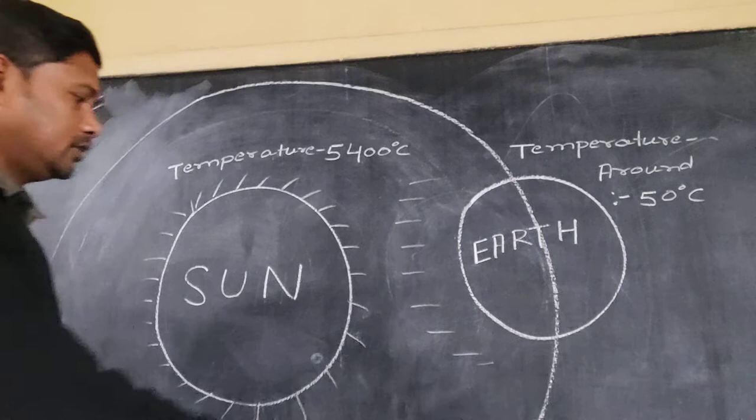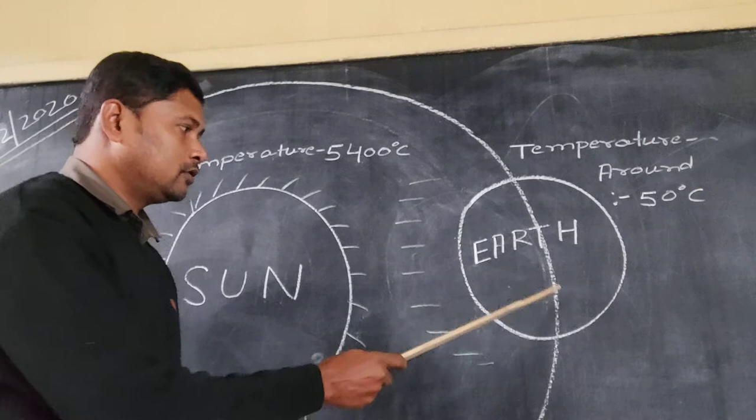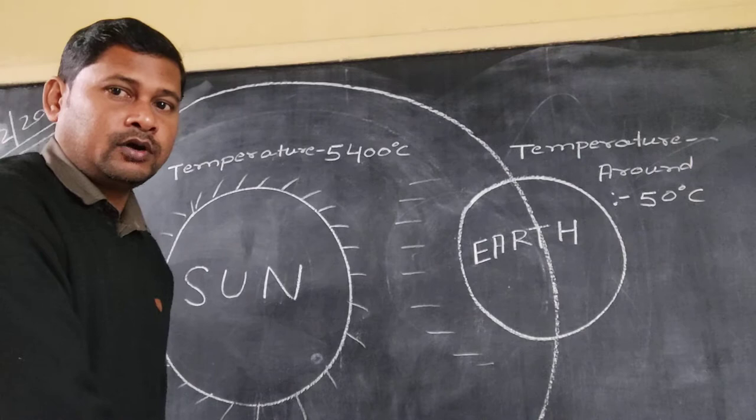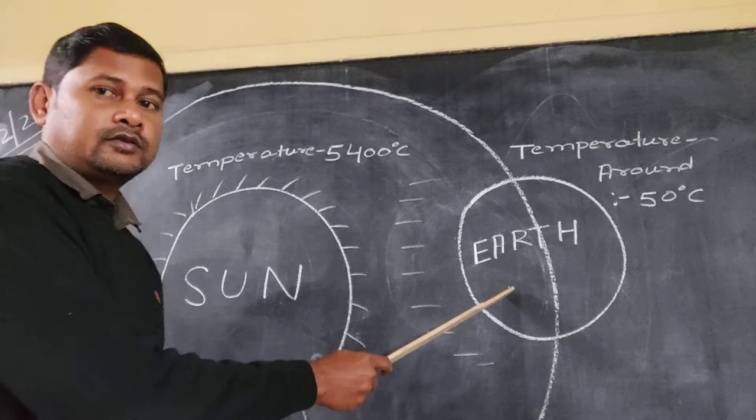So here as you know, the Earth moves around the sun, and the Earth is moving on a fixed path. One path is there, you can see here I have drawn this one. This path is known as the orbit.